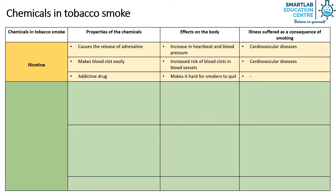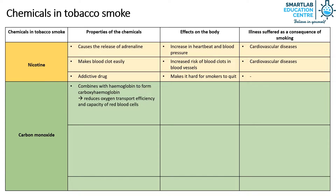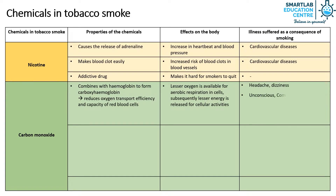The second chemical found in tobacco smoke is carbon monoxide. Carbon monoxide combines with hemoglobin to form carboxyhemoglobin. Carboxyhemoglobin reduces the oxygen transport efficiency and capacity of red blood cells, causing lesser oxygen to be available for aerobic respiration in cells, and subsequently lesser energy is released for cellular activities. As a result, this can cause headache, dizziness, unconsciousness, comatose, death, and premature death or low birth weight in babies born to mothers who smoke.